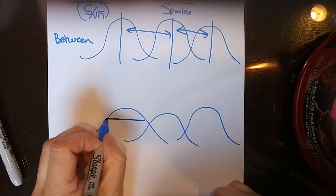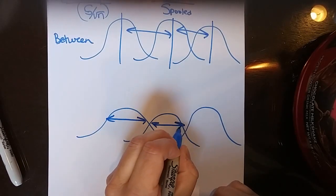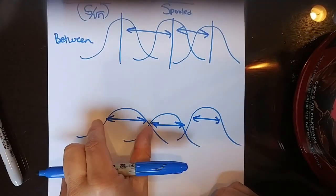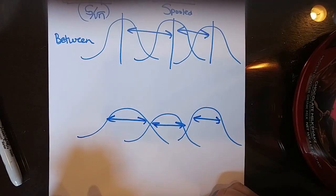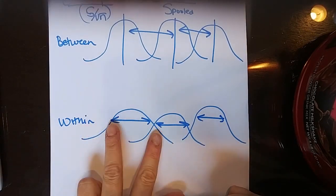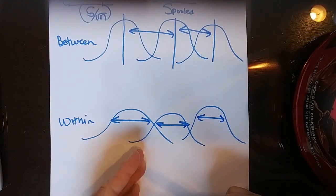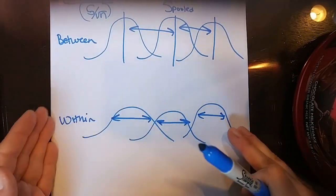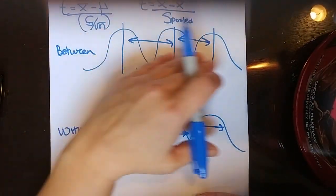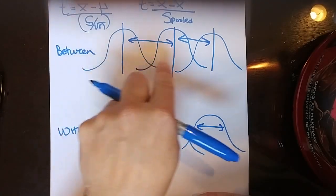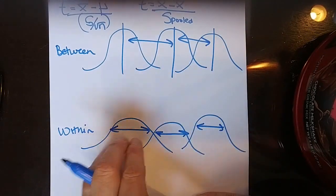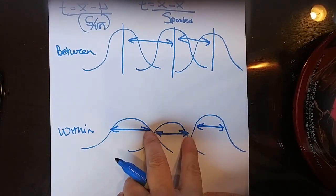After we've accounted for that, we also have to talk about how each distribution has its own within variability. Despite the fact that these distributions are spread up the scale, they have different widths, and we have to account for that width — we call that within variability. A distribution could be very skinny or very fat while having the mean in the same spot. So I have to think about both the separation of means across the scale and the individual width of each distribution.